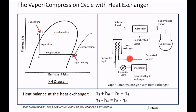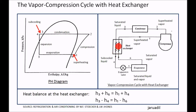The expansion from 4 to 5 is at constant enthalpy, and the evaporation is at constant pressure. From 6 to 1 we have what is called superheating of the refrigerant — because it absorbed heat from the saturated liquid coming from the condenser. So heat was transferred there, causing a small amount of superheating.